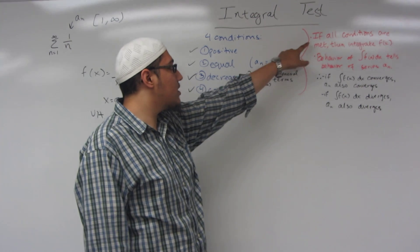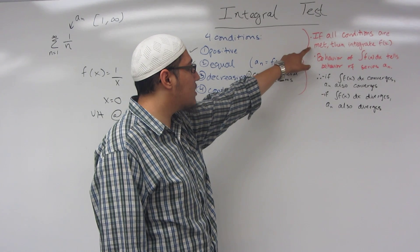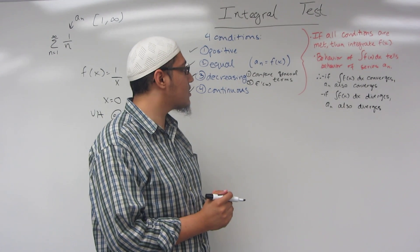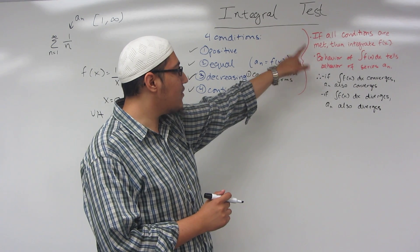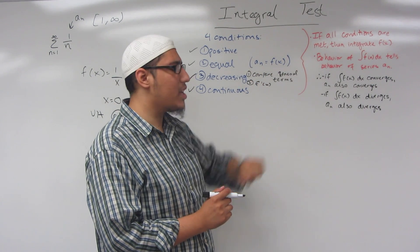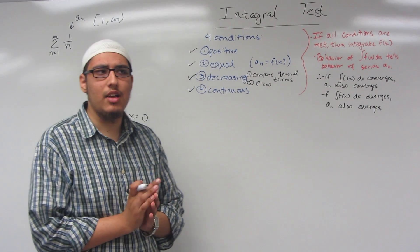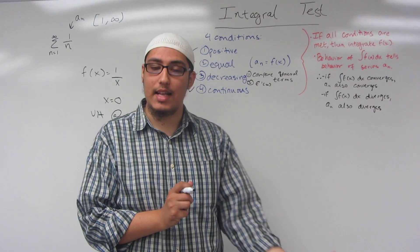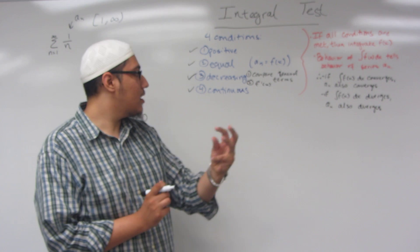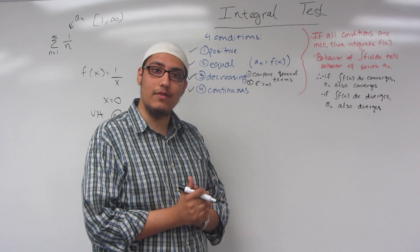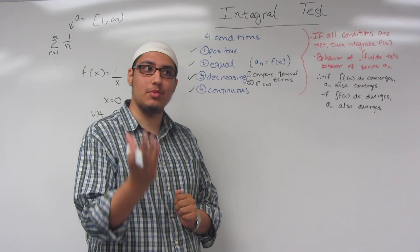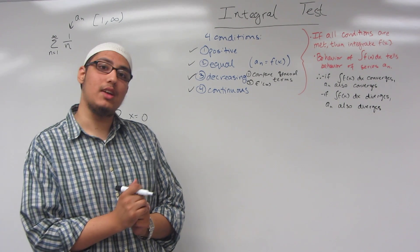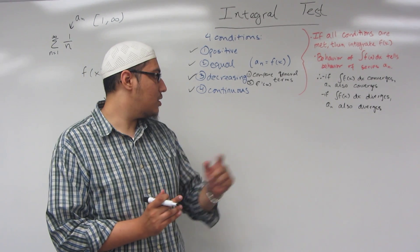Now, since all conditions are met, we can integrate our function f(x). The behavior of that integral tells us the behavior of the series. If the integral converges — has a finite answer — then our series also converges. If the integral diverges — gives negative or positive infinity — then our series will also diverge.